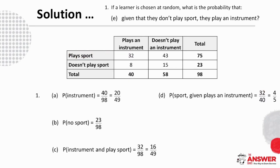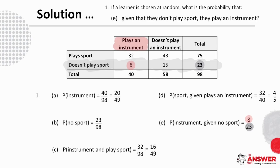And then E, the probability of playing an instrument given that they don't play sport: here we are looking at a part of the information — those who don't play sport. So the probability of playing an instrument is 8 over 23. This first example was to help orientate you around a contingency table.